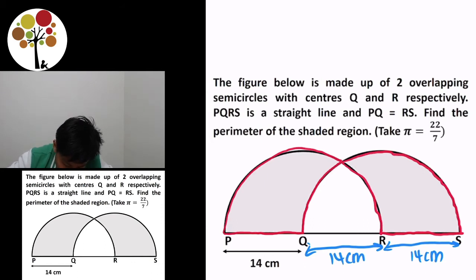See? So it's over here. This is half of one semicircle, and here's another half of a semicircle. So you get one whole circle.